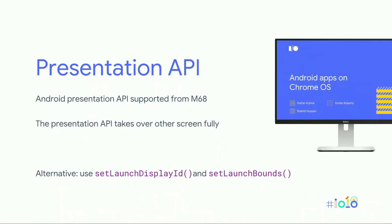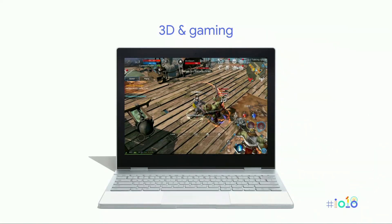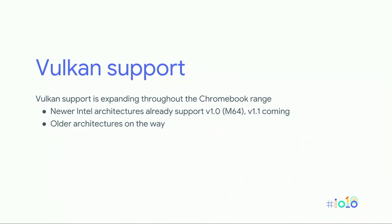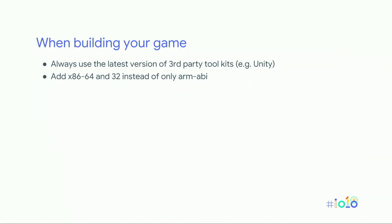Presentation API: we were asked to get this to you, and it's coming very soon — pretty much available now. You can also use setLaunchDisplayID and setLaunchBounds, which do pretty much the same thing. For 3D and gaming: we have Vulkan support — for the Pixelbook, version 1.0 was already shipping beginning of this year, 1.1 should be shipping around now, and older architectures are on the way. Vulkan is much faster. When building your game, always use the latest version of your framework — for example Unity keeps fixing issues, so if a window size changes or input region shifts they will fix that for you. Using an older version may cause your app to fail when being resized.